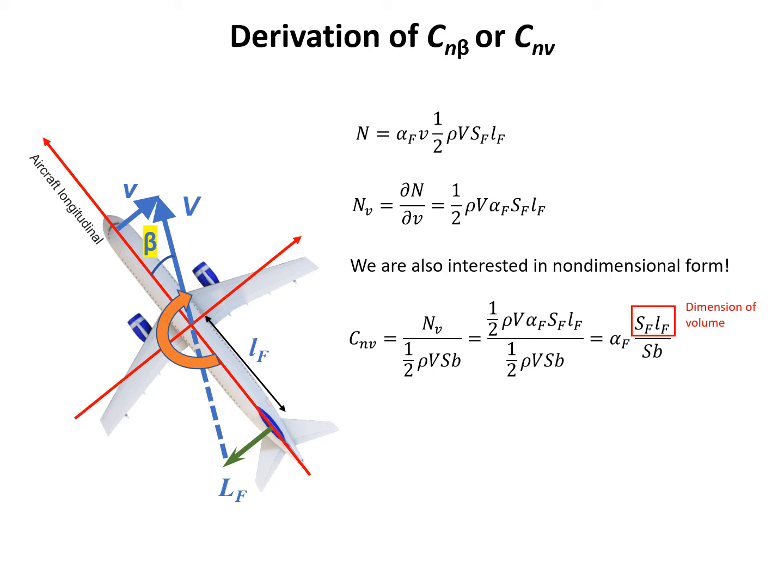Above the bar, it's a volume of the fin. Below the bar is a volume of the wing. We can write it down in an easier way. We can call it C_nβ or C_nv equals α_F times V_F, and V_F equals that part. We call V_F the fin volume. Actually, it's a ratio between the volume of the fin and the volume of the wing.